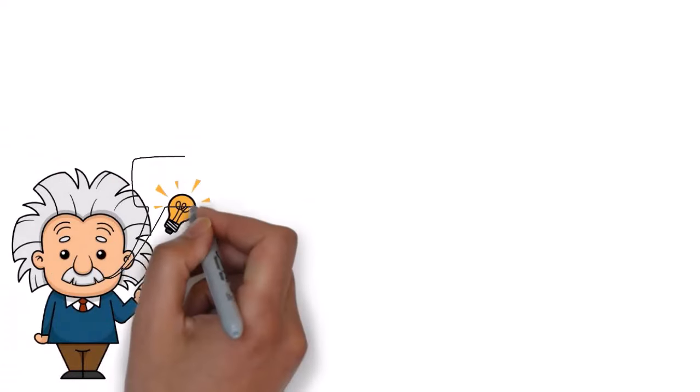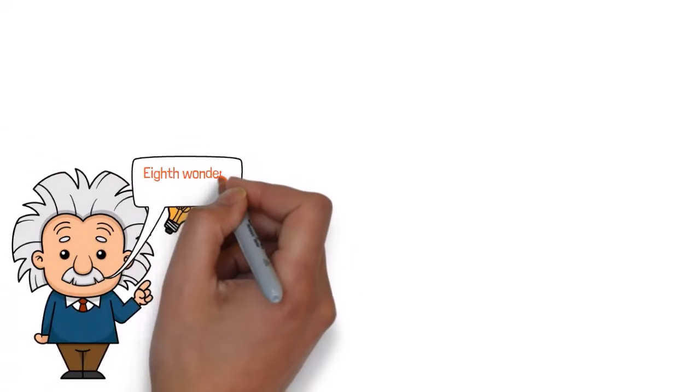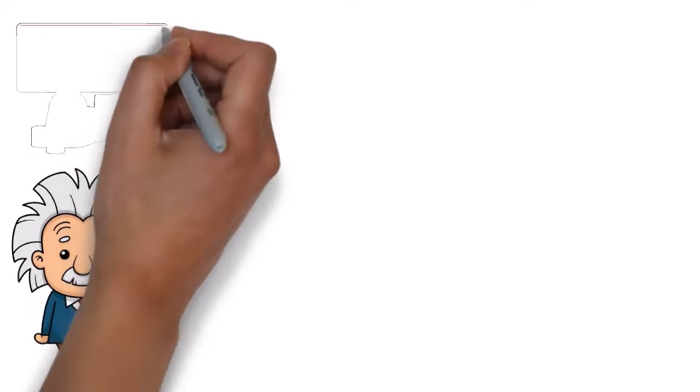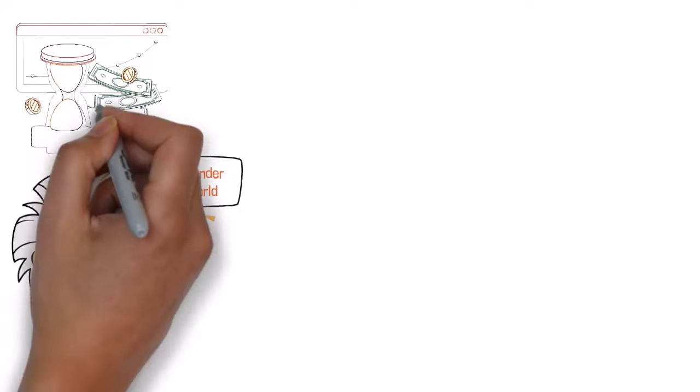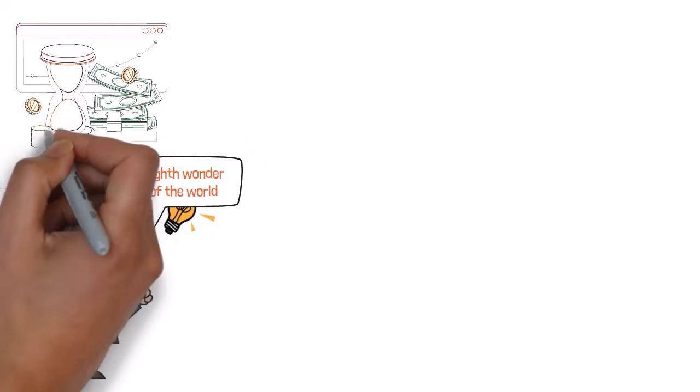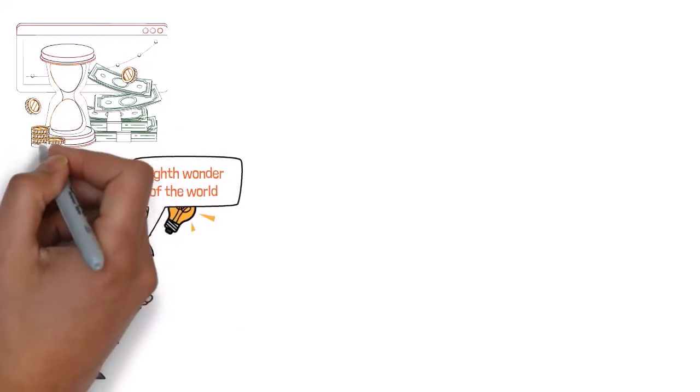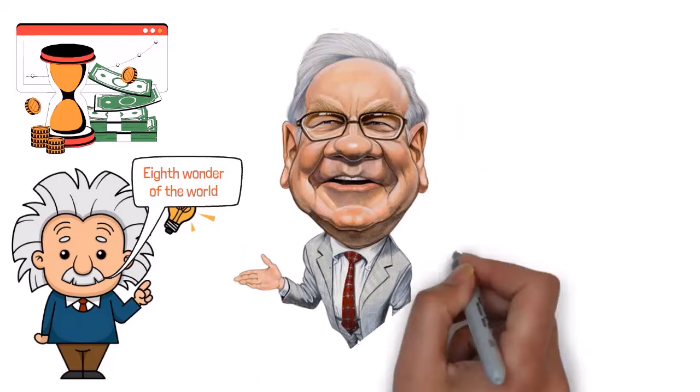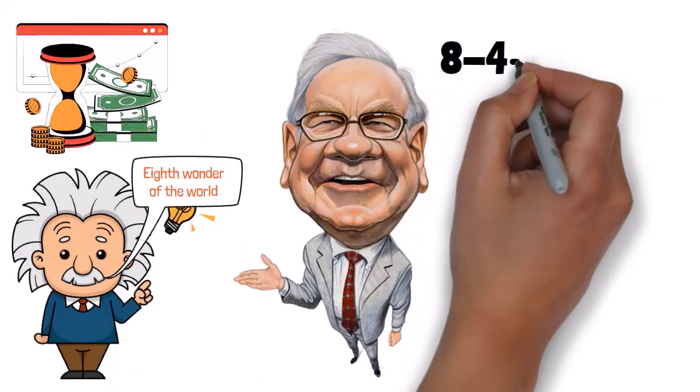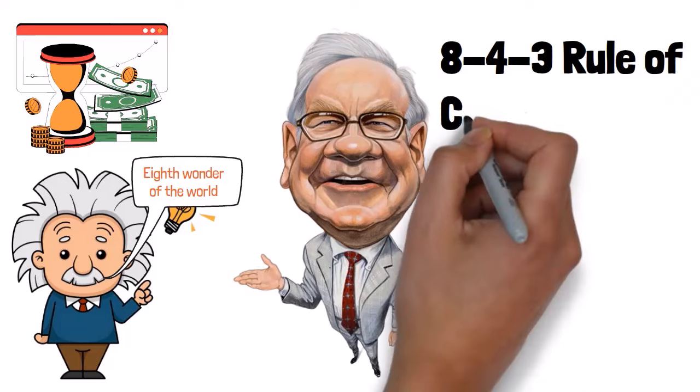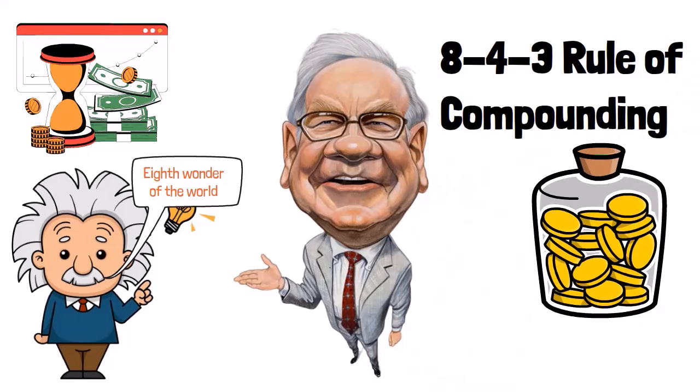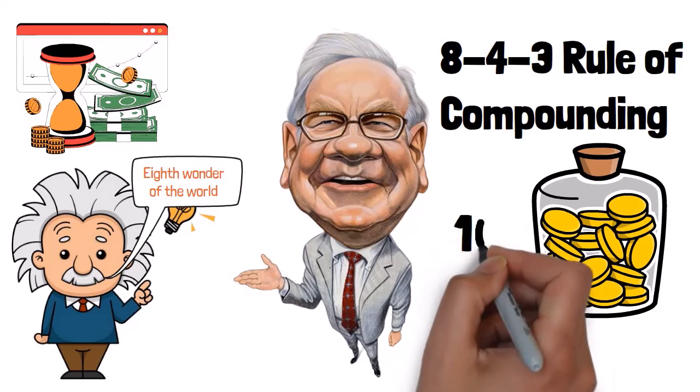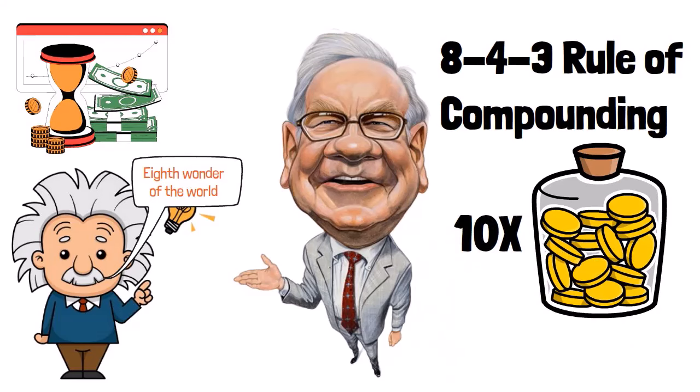Did you know that Albert Einstein called compound interest the 8th wonder of the world? While it might not sound as exciting as a roaring roller coaster, compounding is the silent yet powerful force behind the vast wealth of many successful investors, including Warren Buffett. In this video, we will explore the 843 rule of compounding, a strategy that can turbocharge your savings and 10x your wealth faster than you ever thought possible.